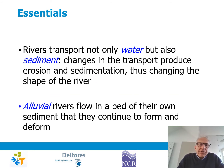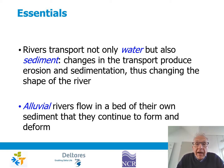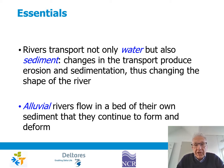What is essential to understand is that rivers transport not only water, which is the most visible part, but also sediment. Changes in the transport of this sediment produce erosion and sedimentation, and that is what changes the shape of the river.